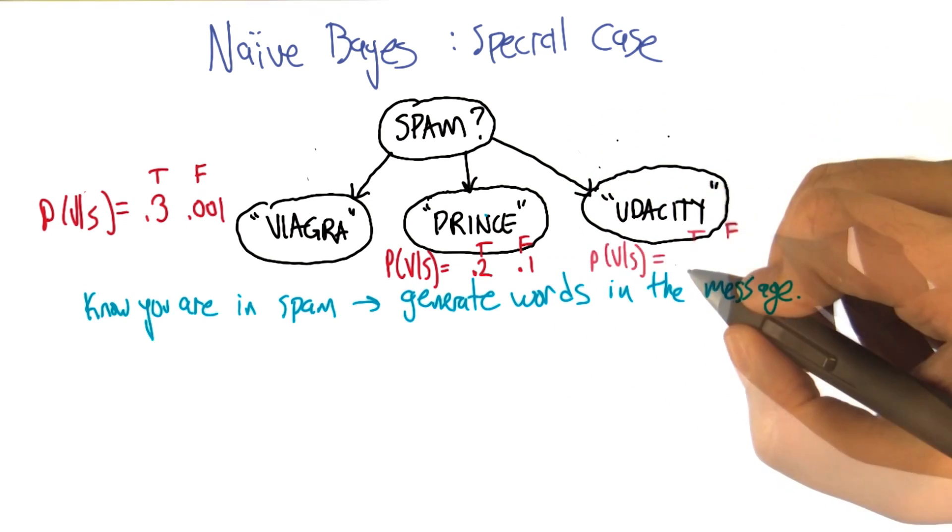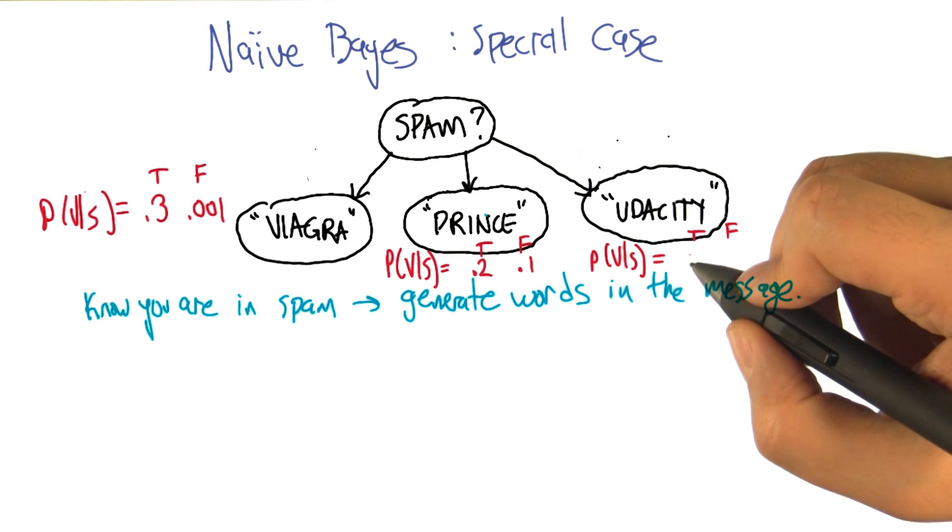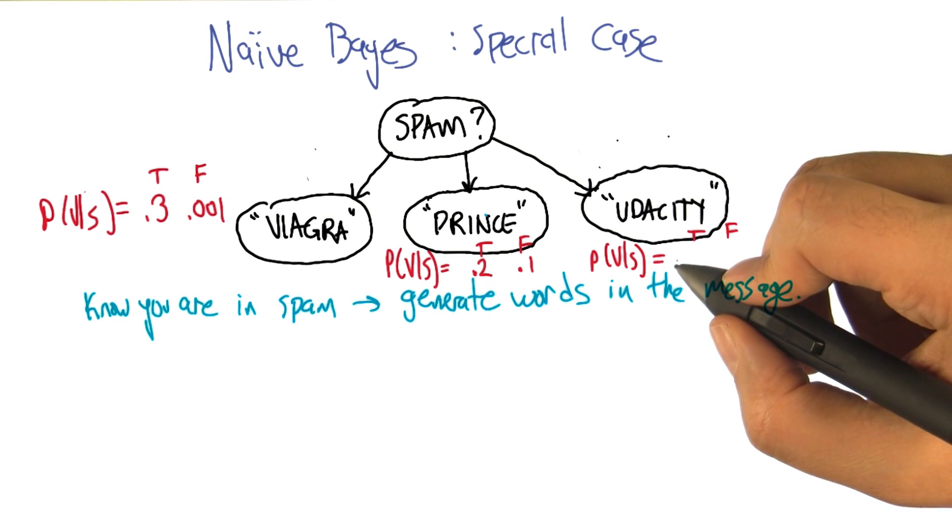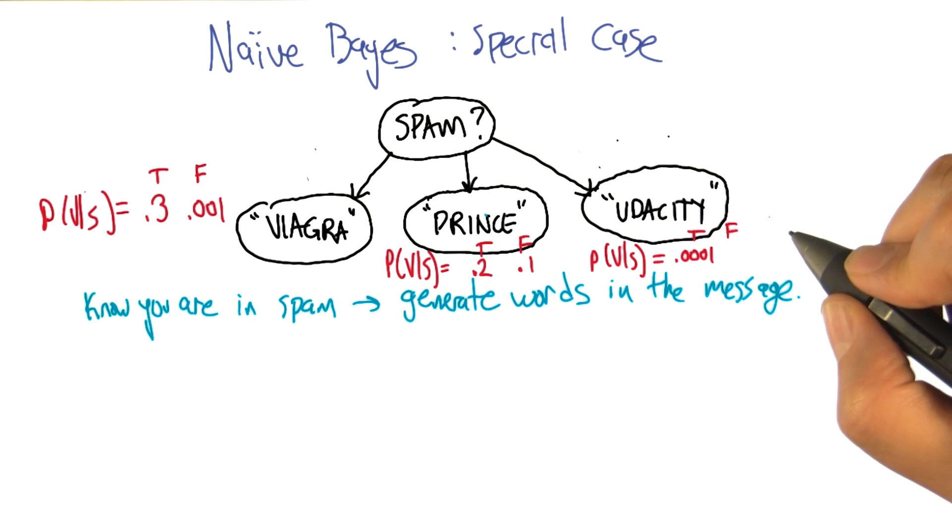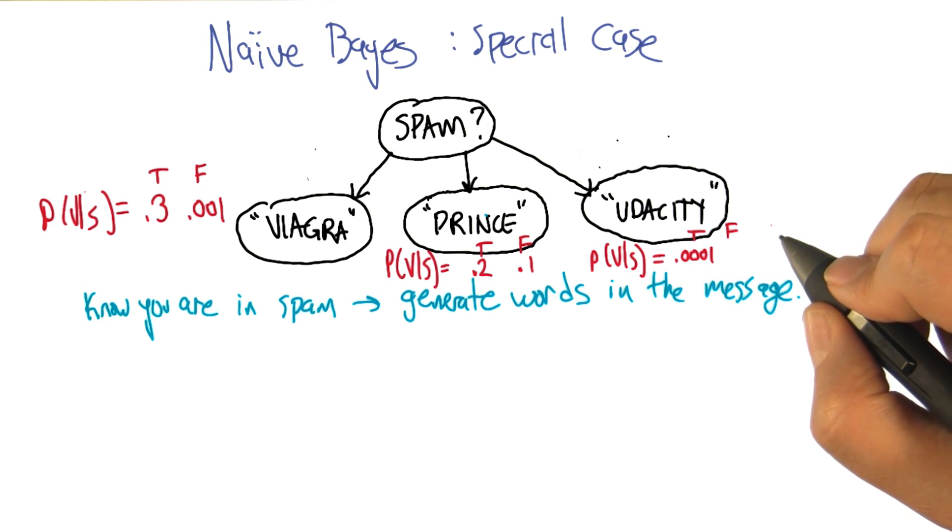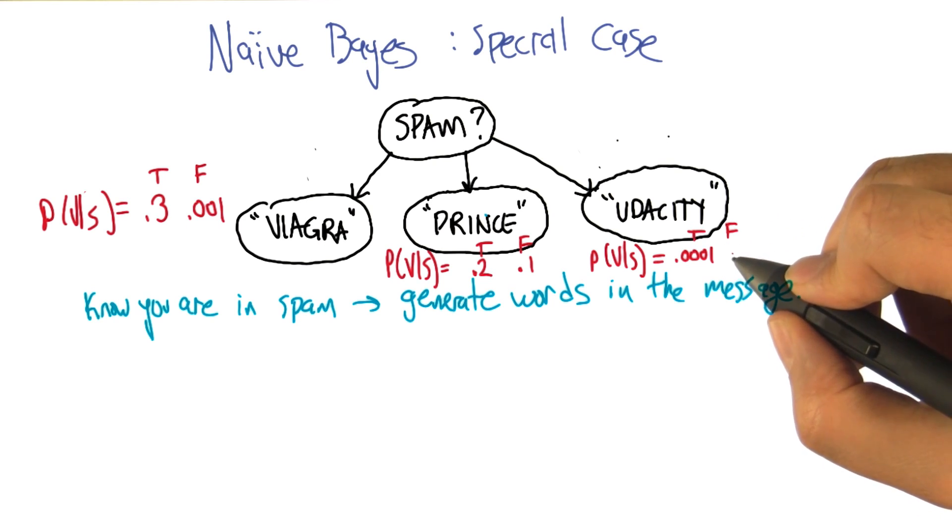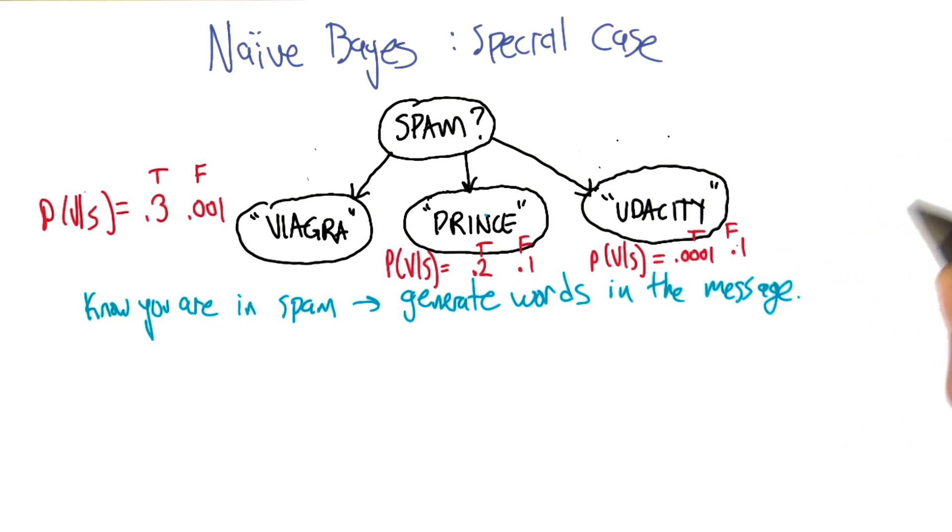All right, so in the messages that you have that are spam, how often does the word Udacity come up? I guess it's pretty low. I don't think I've ever seen a spam that mentions Udacity. All right, what about among your non-spam email? Well, again, increasingly it's getting higher and higher. Almost as much as I get prince mail. All right, so we'll call that 0.1 as well then. Okay.